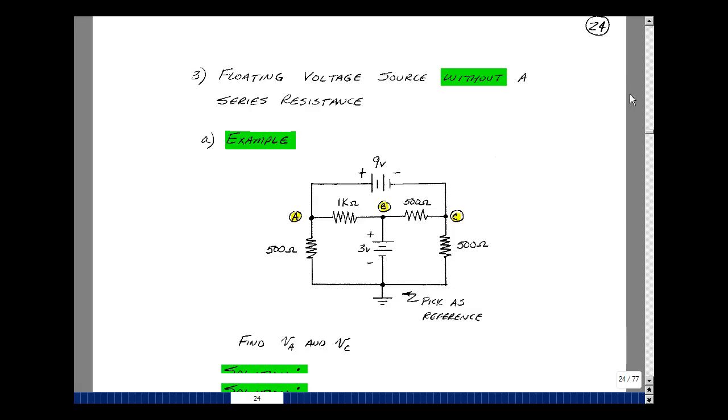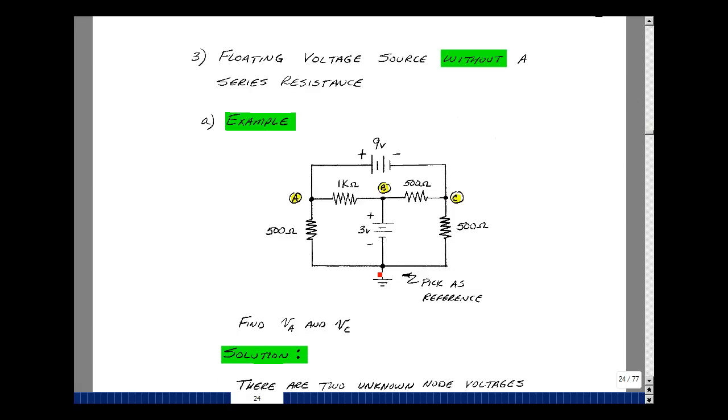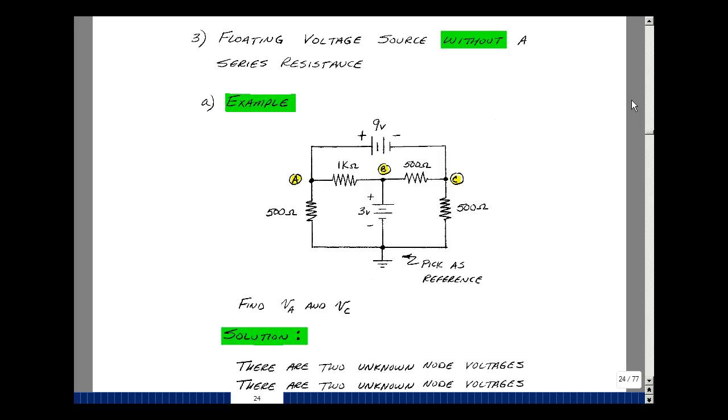Here I've got two voltage sources, 9 volts and 3 volts, and I've picked this node as the reference node, and so I now know node voltage B is 3 volts. So I still have two unknown node voltages here, V sub A and V sub C. Let's take a look at trying to solve for those two.